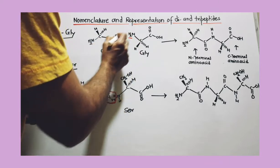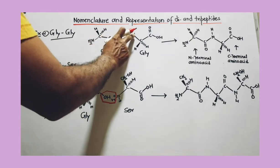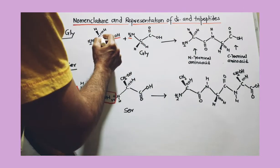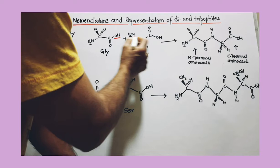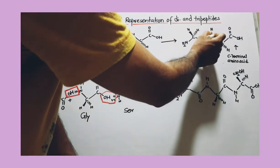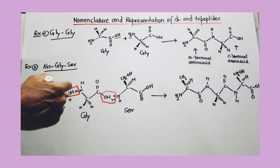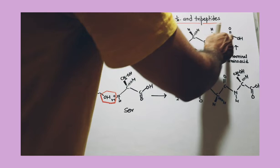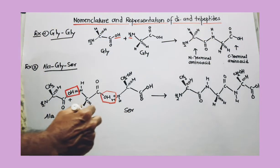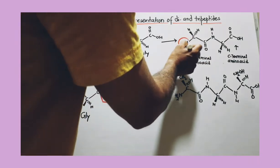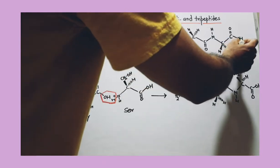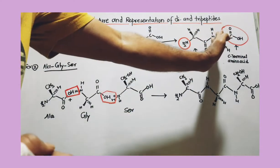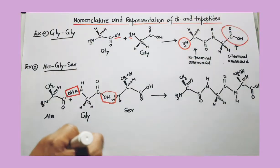Represent the linkage in a zigzag way: if C is down, N will go up; if C is up, N will go down. Keep this alternating pattern throughout. Where OH is removed, NH comes in its place. So if one atom is down, the adjacent atom is up, and vice versa. In this way you can represent the dipeptide. The amino acid with the free amino group is the N-terminal amino acid, always on the left. The amino acid with the free COOH group is the C-terminal amino acid, always on the right.